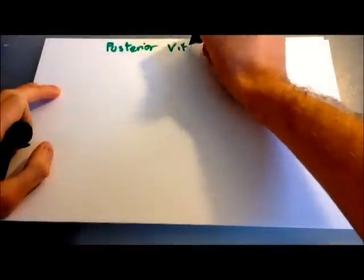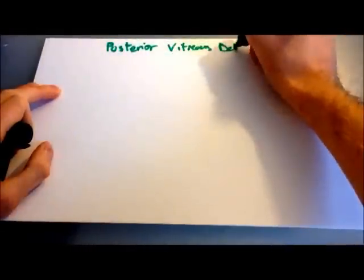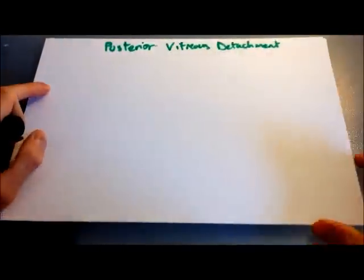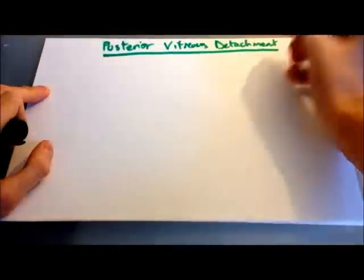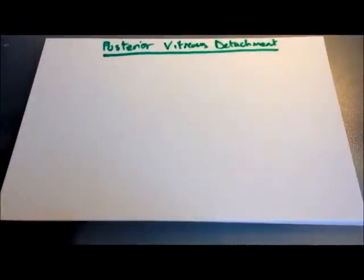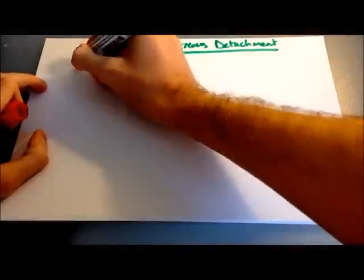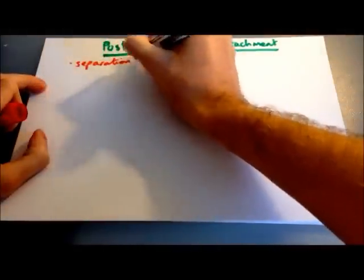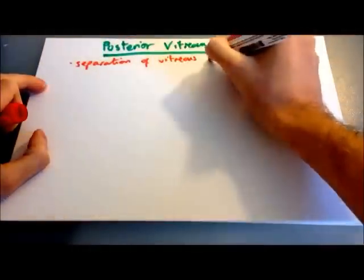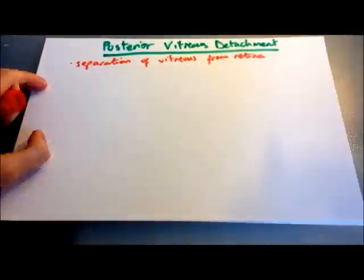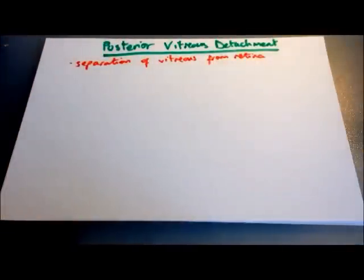We'll start by looking at posterior vitreous detachment, which is separation of the vitreous membrane from the retina. This isn't something that causes complete loss of vision, but it is a risk factor for things like retinal detachment.